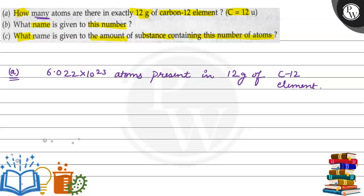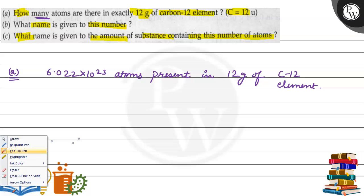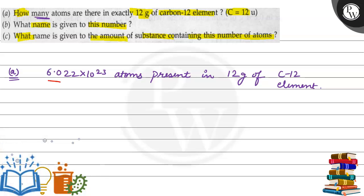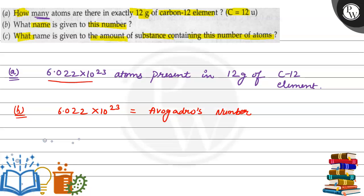The second part is: what name is given to this number? The number we got is 6.022 into 10 to the power 23. So what name do we give to this number? This value 6.022 into 10 to the power 23 is a constant value and it is given as Avogadro's number. We can also call it Avogadro's constant.